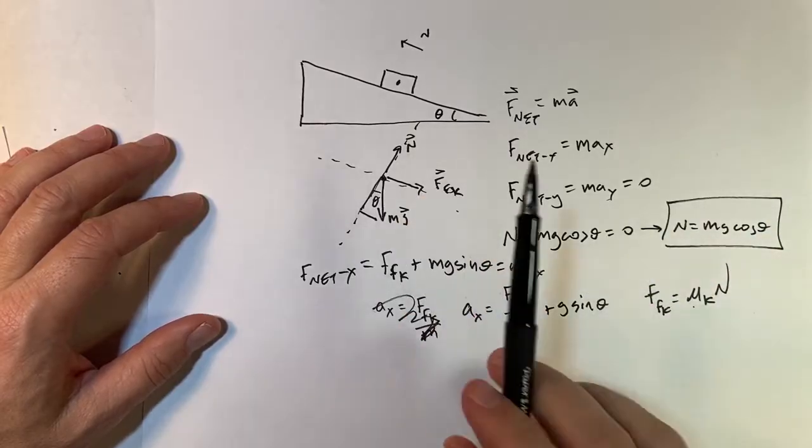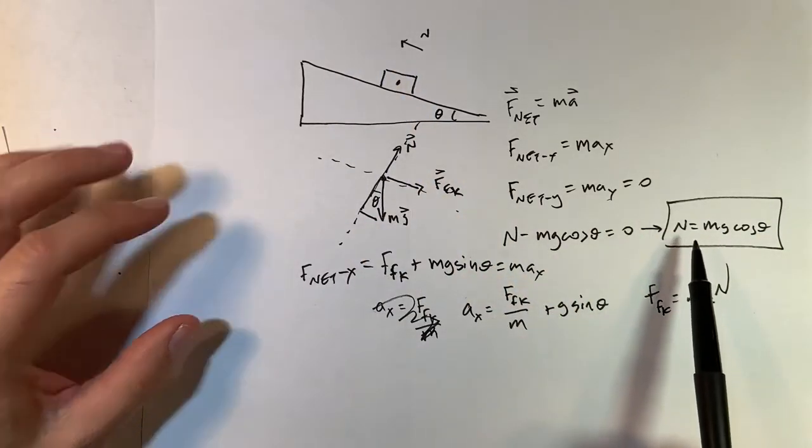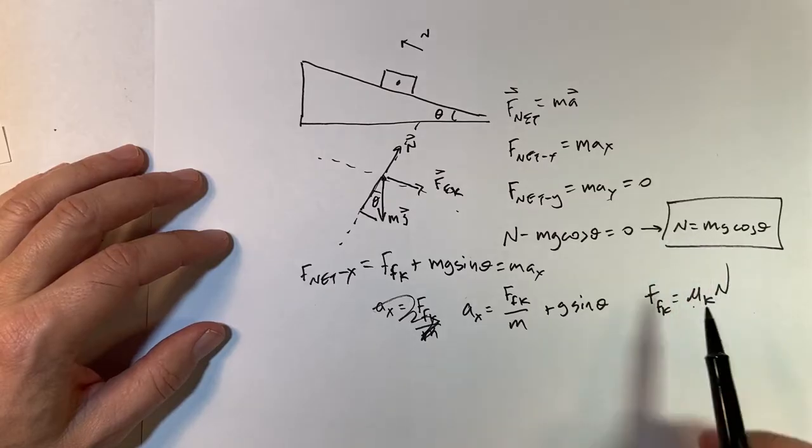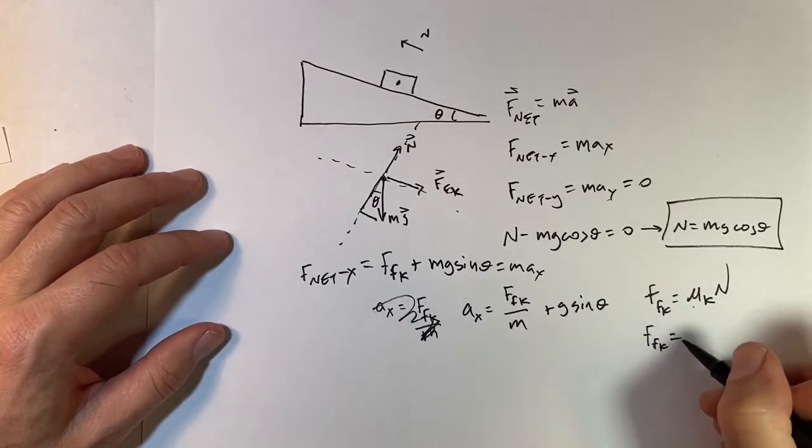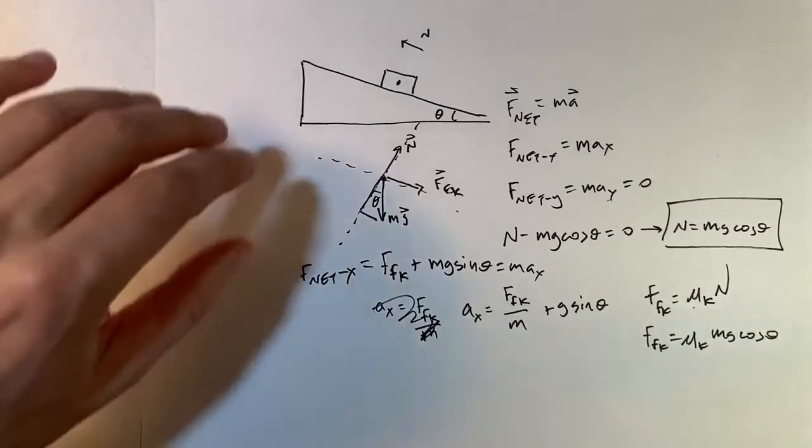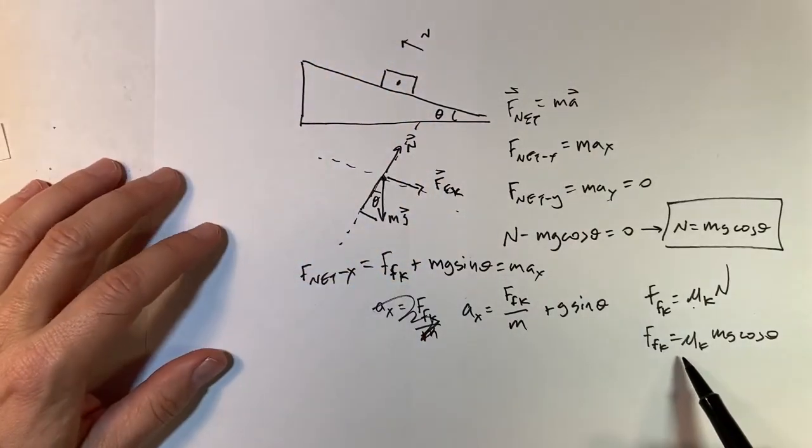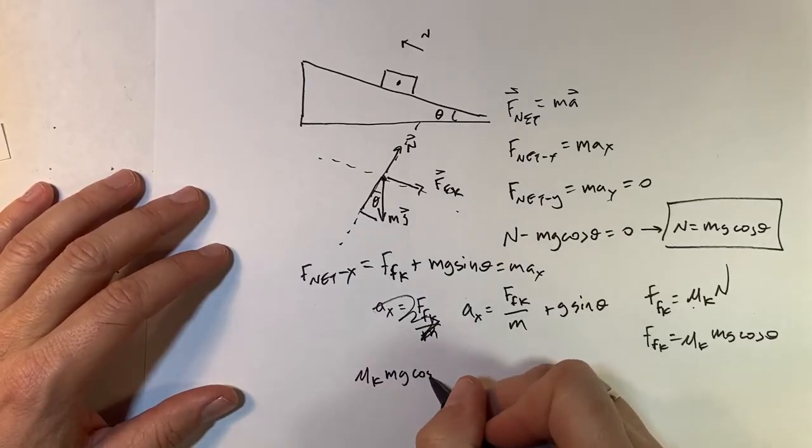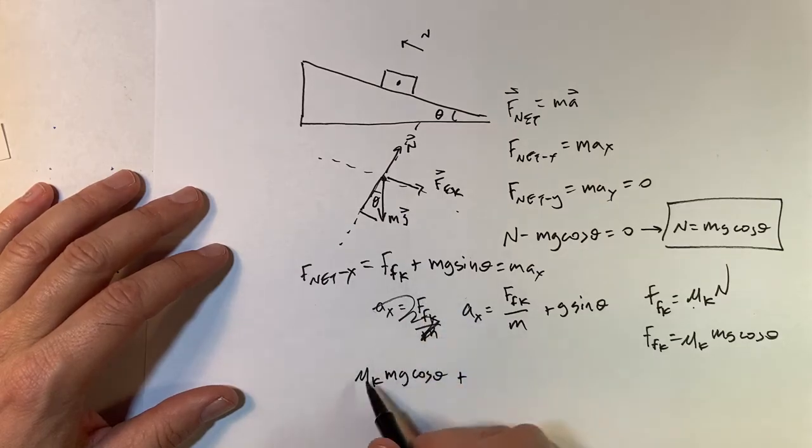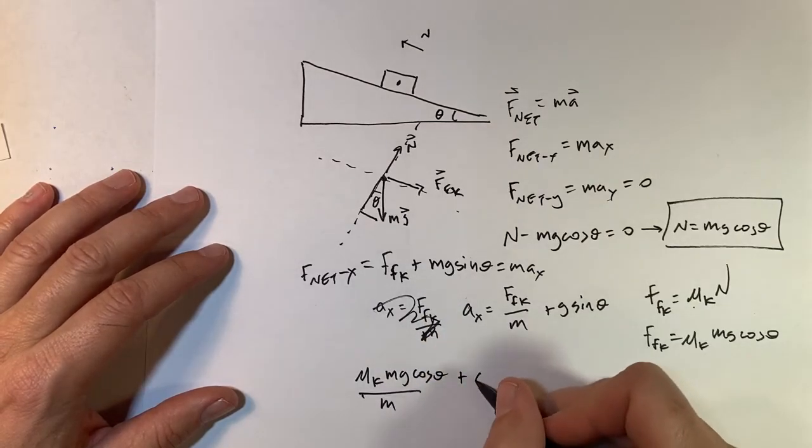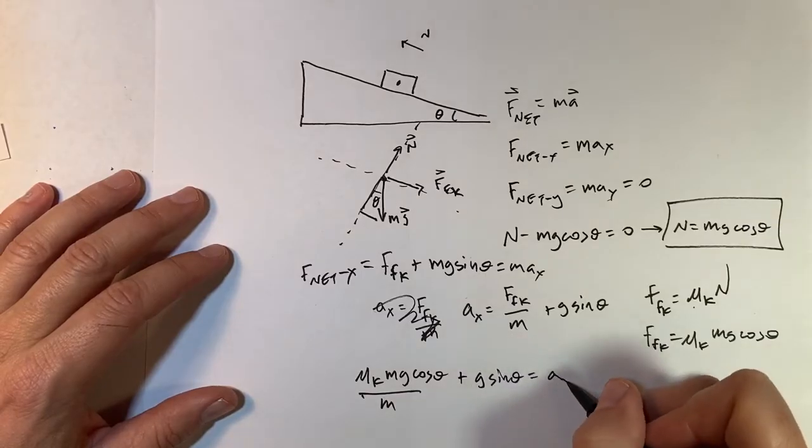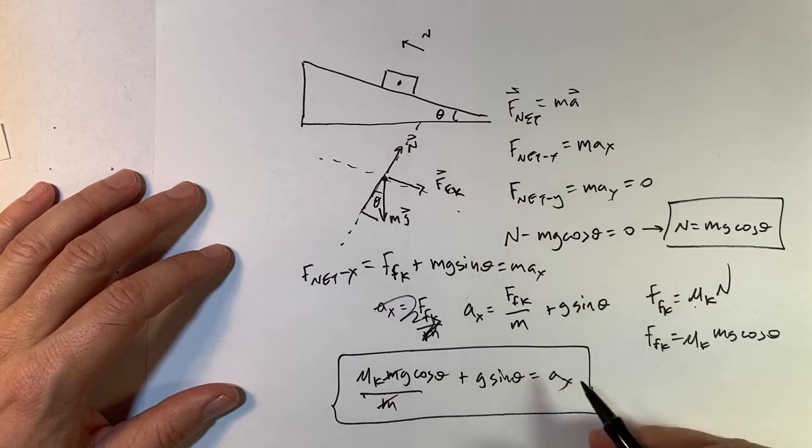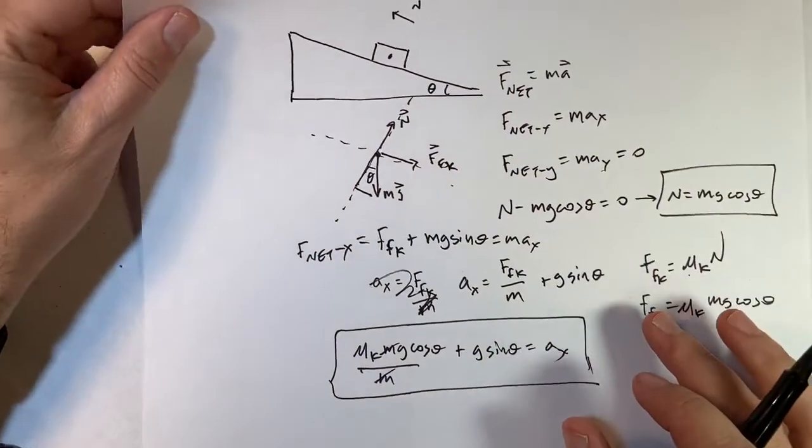Remember, this is important. N, two things. N is not straight up and n is not equal to mg. Those are two things that students make mistakes on. So be careful about that. So put that in right here. The frictional force kinetic mu k mg cosine theta. And then I get, put this in up here and I get mu k mg cosine theta, but the m's cancel over m, plus g sine theta equals a x. And I can put in my values there.